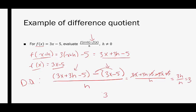The difference quotient equals 3. Previously I said it's basically like finding the slope on a curve between two points. But if you look at our original function, it was a linear equation, so it makes sense that the difference quotient would be 3 — because 3 is also the slope of the line that was given.